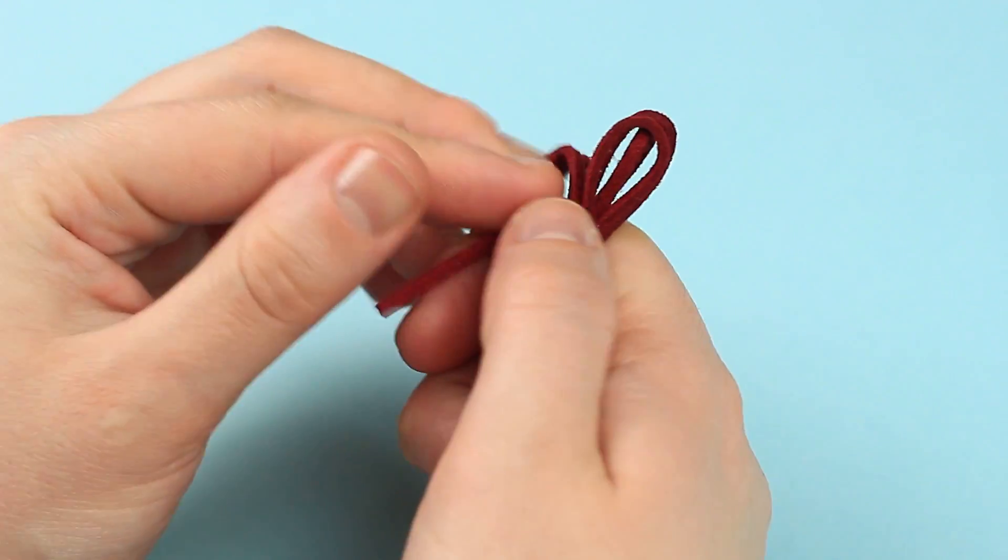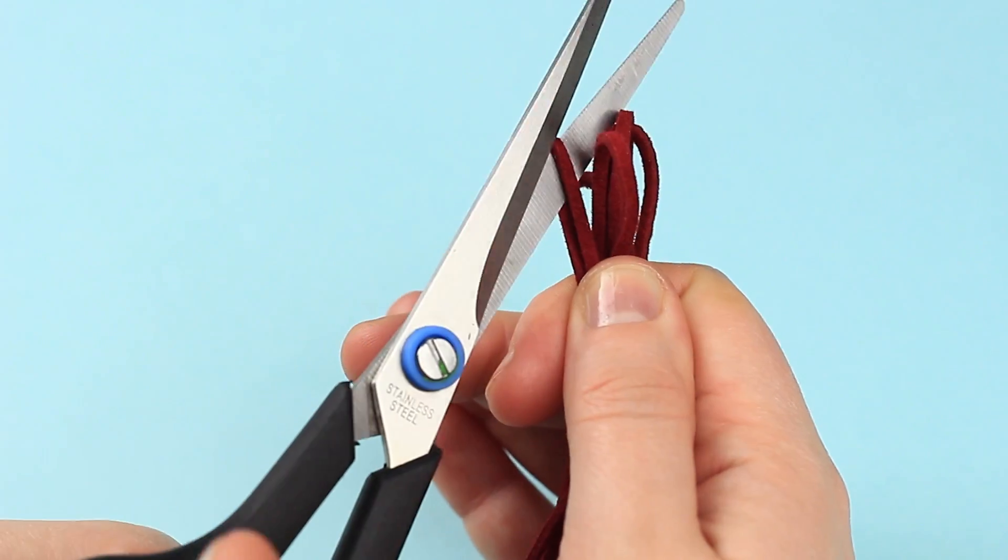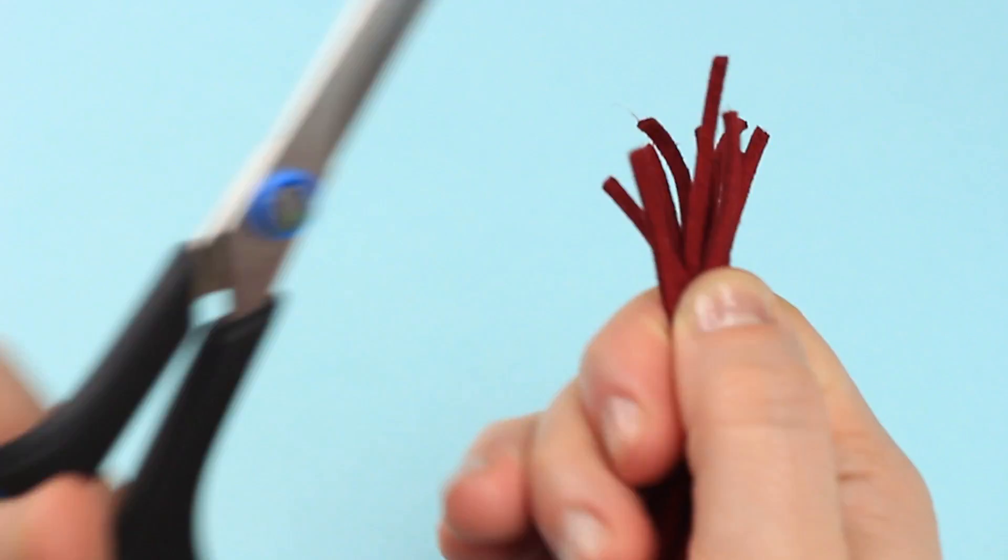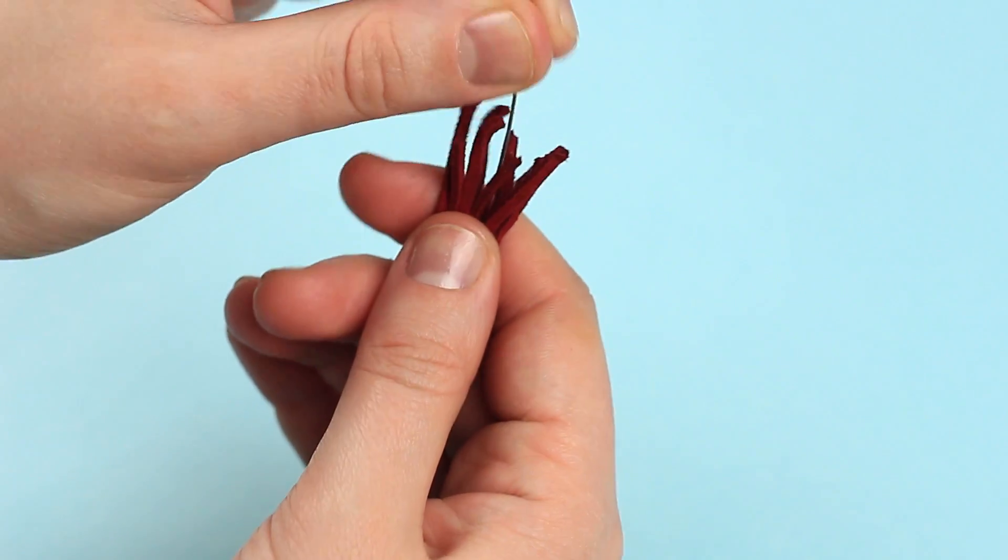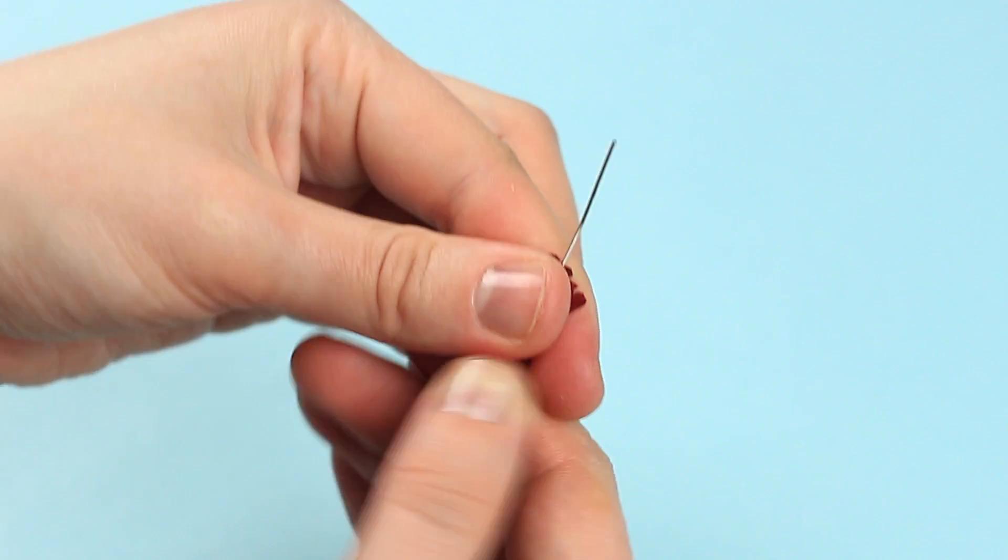Fold the cord several times. Cut out to make a tassel. Take a supply pin into the middle of the tassel and hot glue the end.